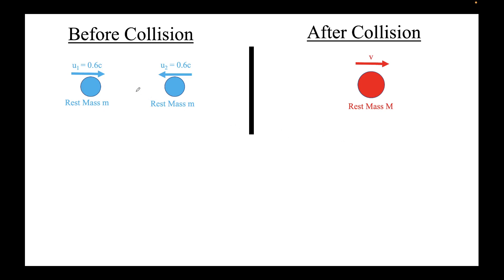Here is the picture before collision: there is a first mass and a second mass, both with the same rest mass m, moving toward each other. After collision, they stick together, and we assume the resulting entity has rest mass capital M, moving in the positive x direction with some velocity v. So we have two unknowns — v and capital M — and since we have two variables, we need at least two equations.